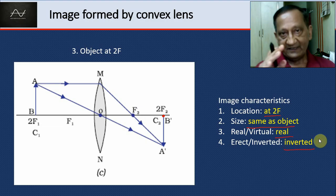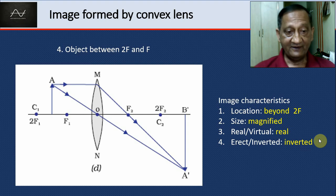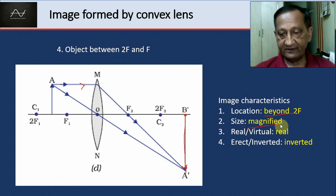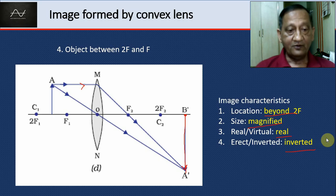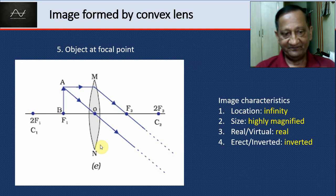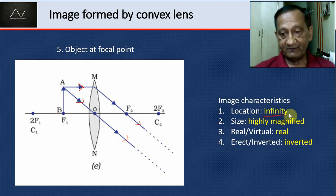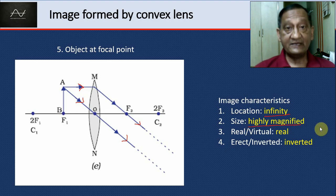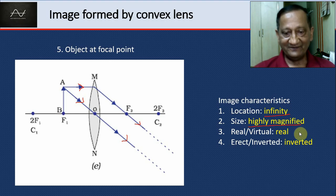Bringing the object closer, between F and 2F: the image is now beyond 2F and magnified. It is still real and inverted. As we bring the object even closer toward the focal point F, the image becomes the biggest possible and forms at infinity. At the focal point the rays emerge parallel and meet at infinity — the image is highly magnified, real, and inverted.